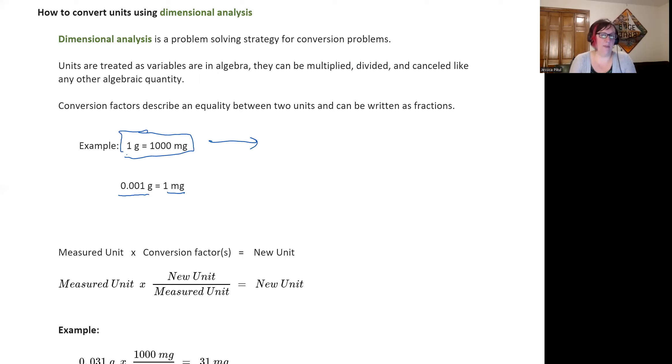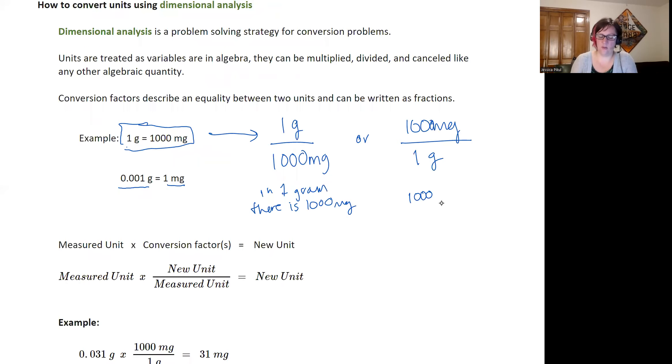And so we can write this one gram equals 1000 milligrams as either one gram divided by 1000 milligrams. And so this would be saying there are in one gram there's 1000 milligrams, or we could write it as 1000 milligrams divided by one gram. And so this fraction is what we'll multiply our measured value by to produce a number that is equivalent, but has different units.